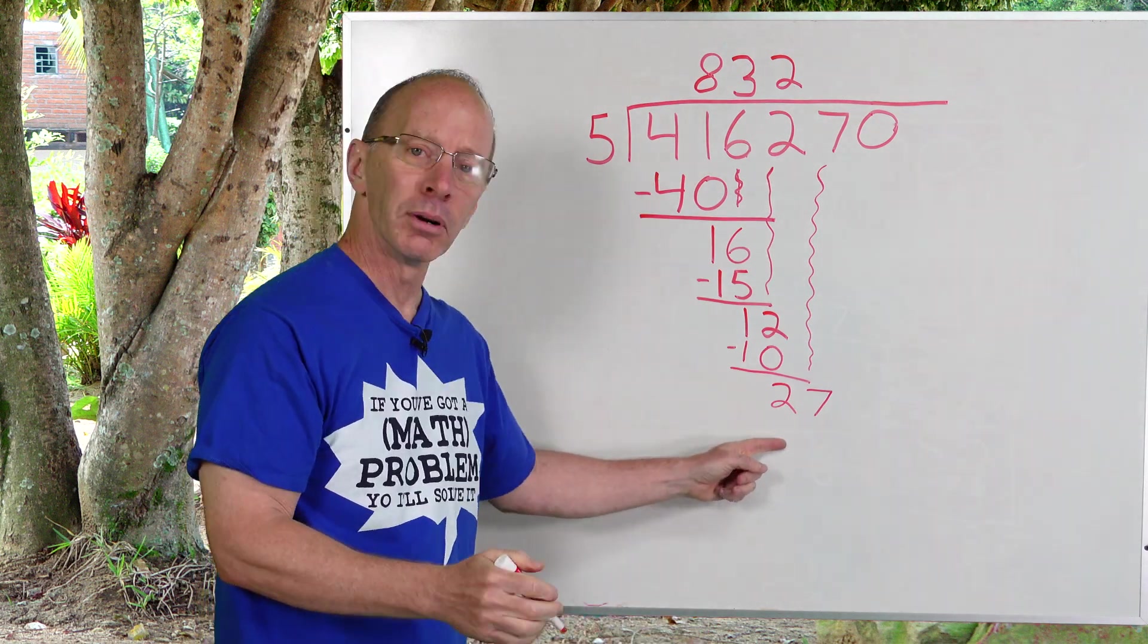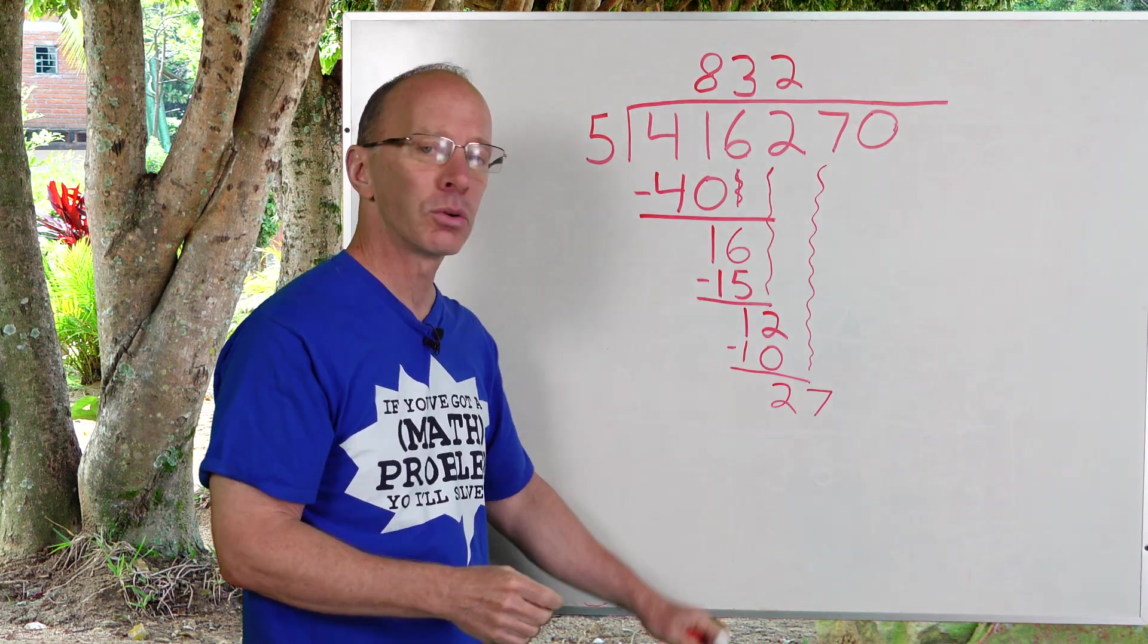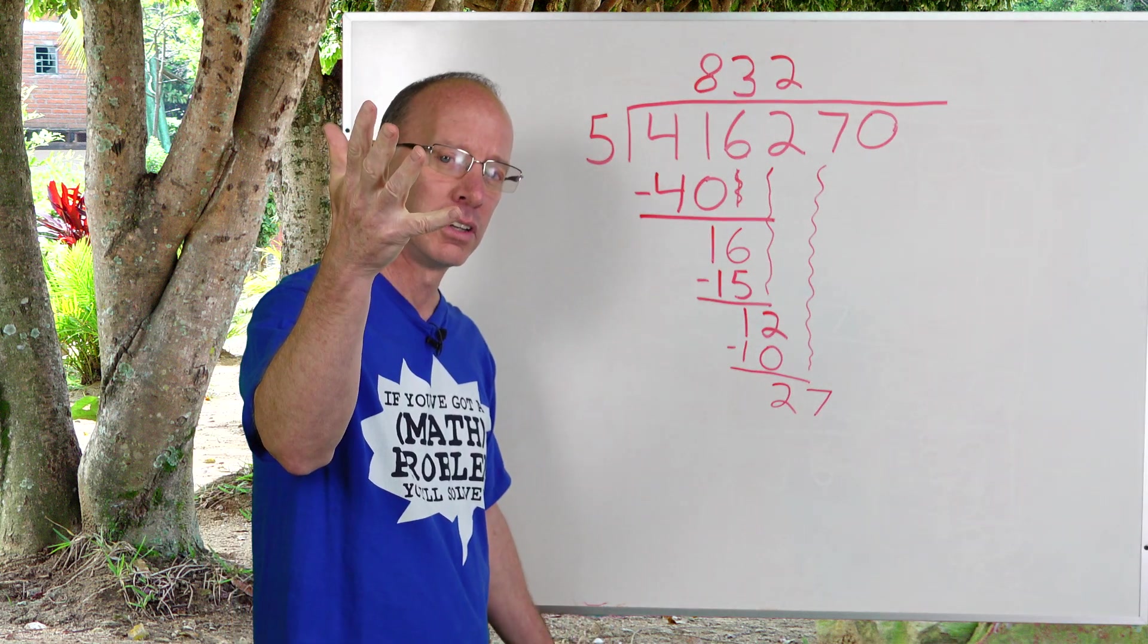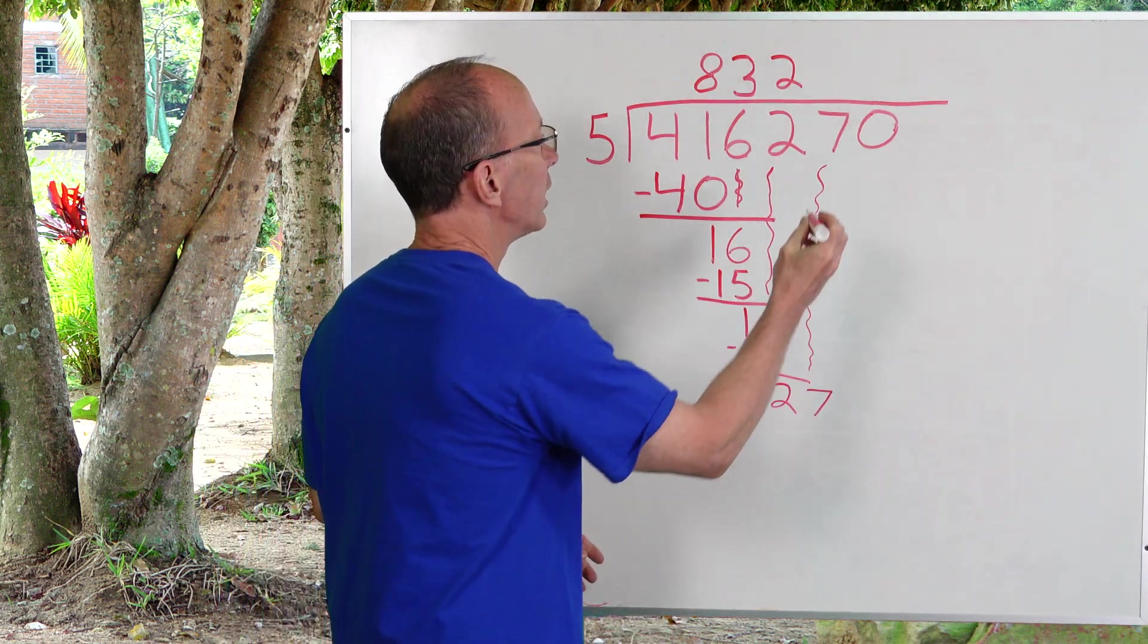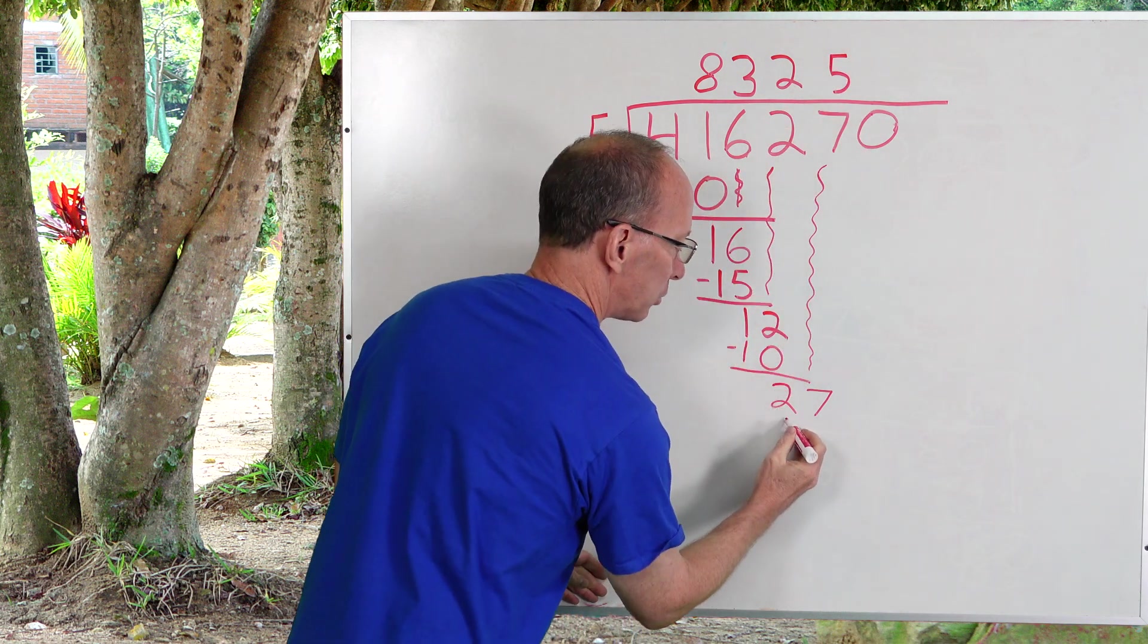It's a little bit bigger number but I think we can handle it. Let's start with 5. How many times can I put 5 into 27? 5, 10, 15, 20, 25, 30, too high. Let's start with this 5. Five times five would be 25. I'm going to put a five right here. Five times five is 25.